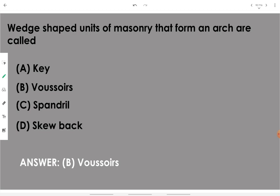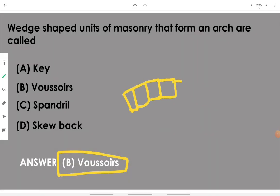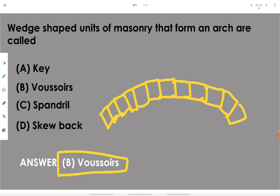The wedge-shaped units of masonry that form an arch are called voussoirs. For example, the units forming a specific arch — when these wedges are joined they form the arc-like structure — are called voussoirs.